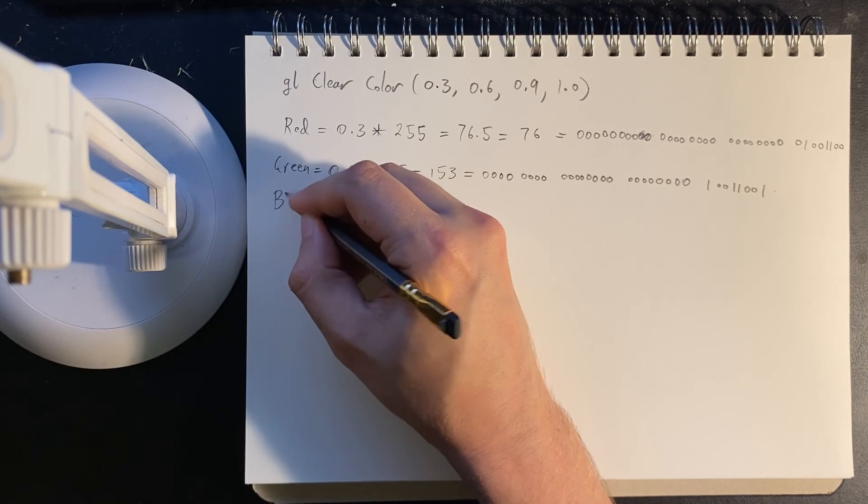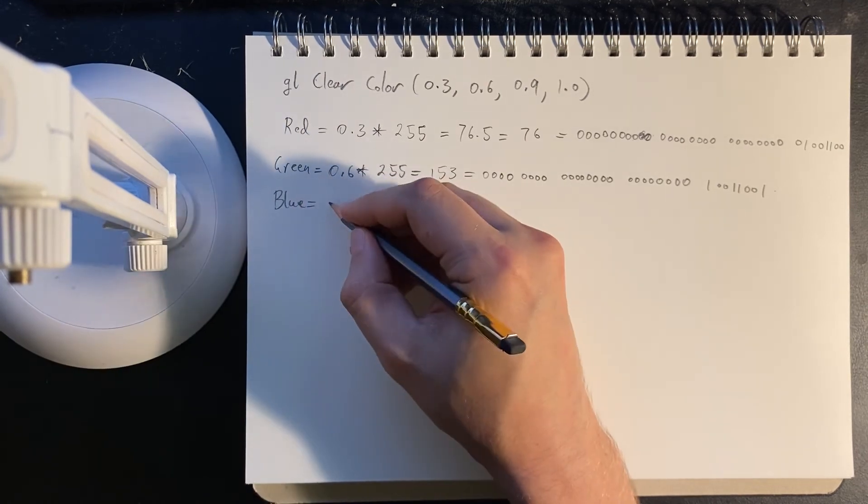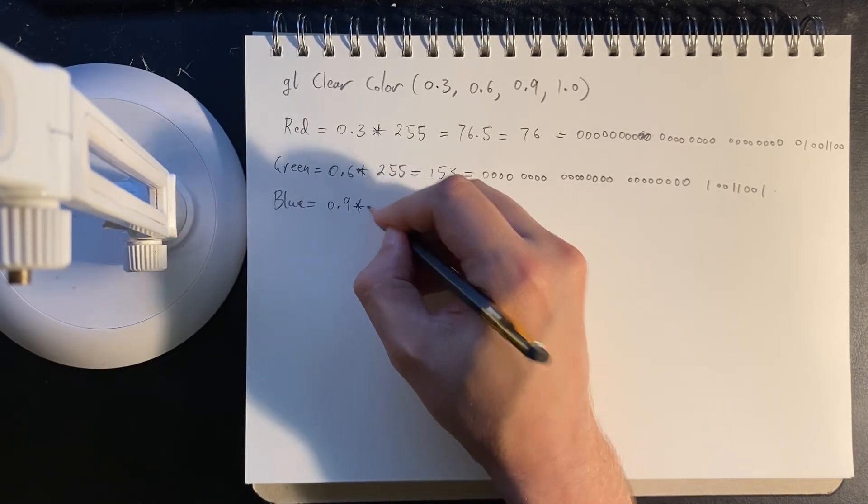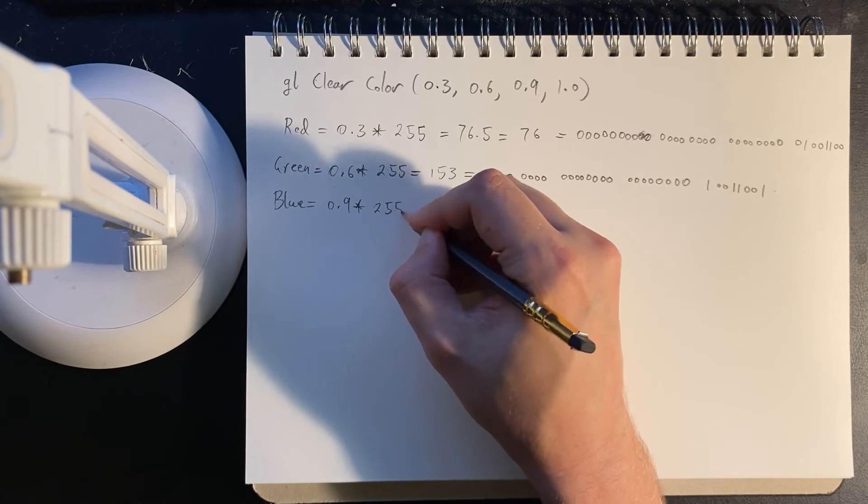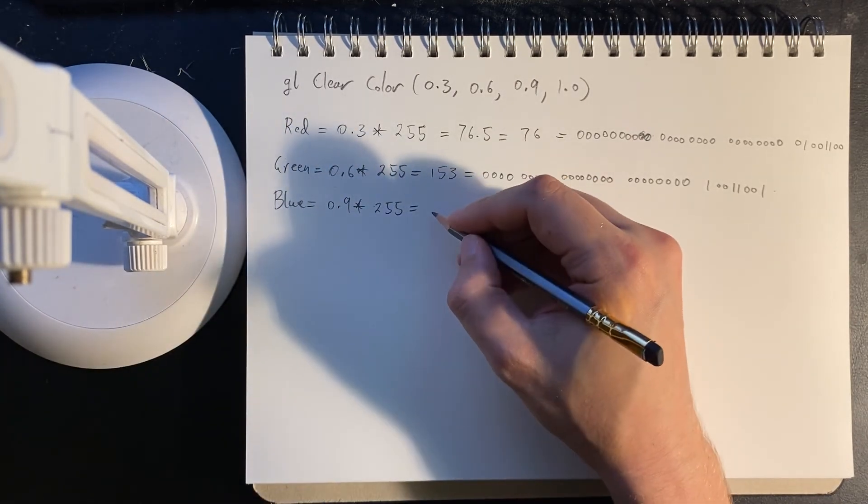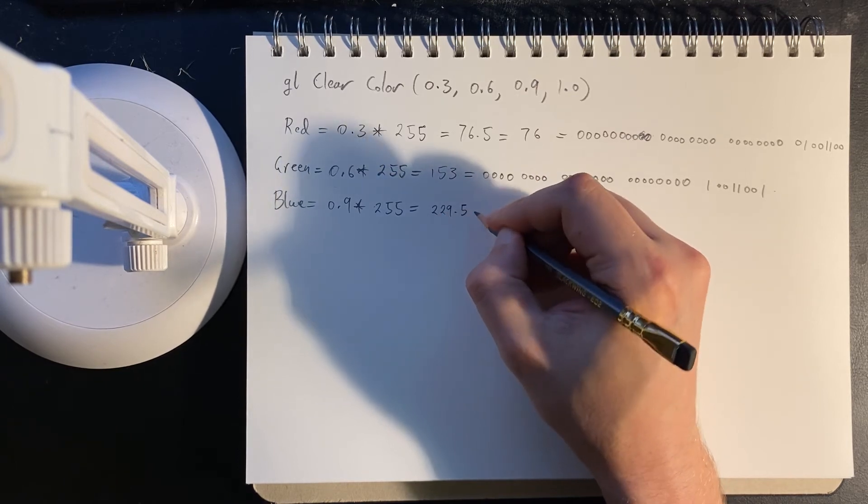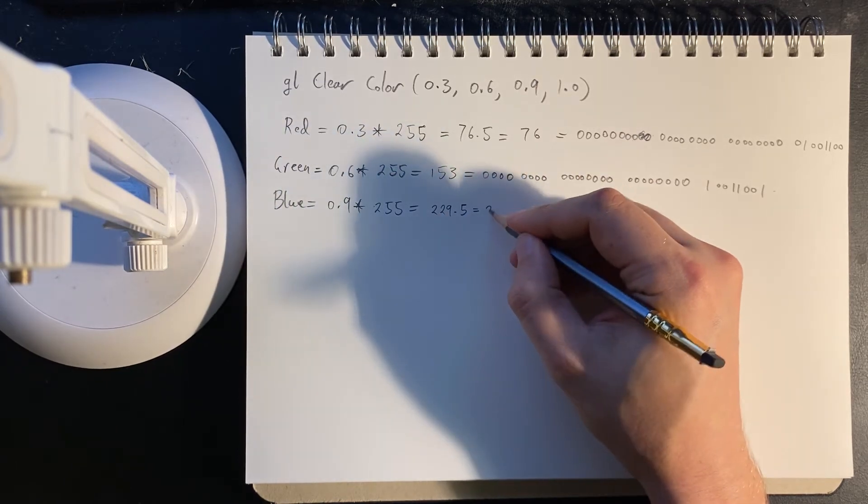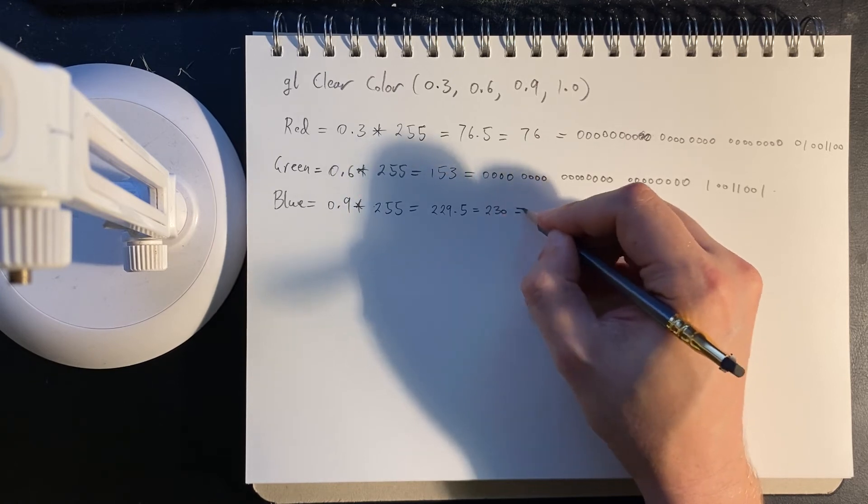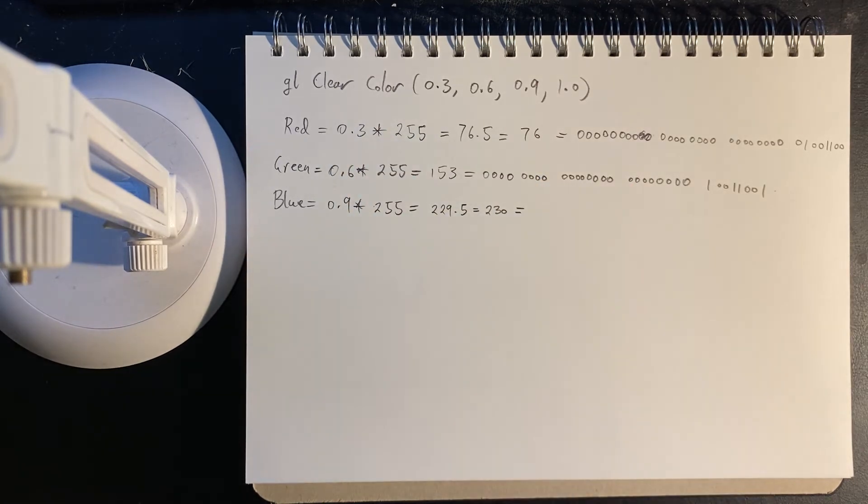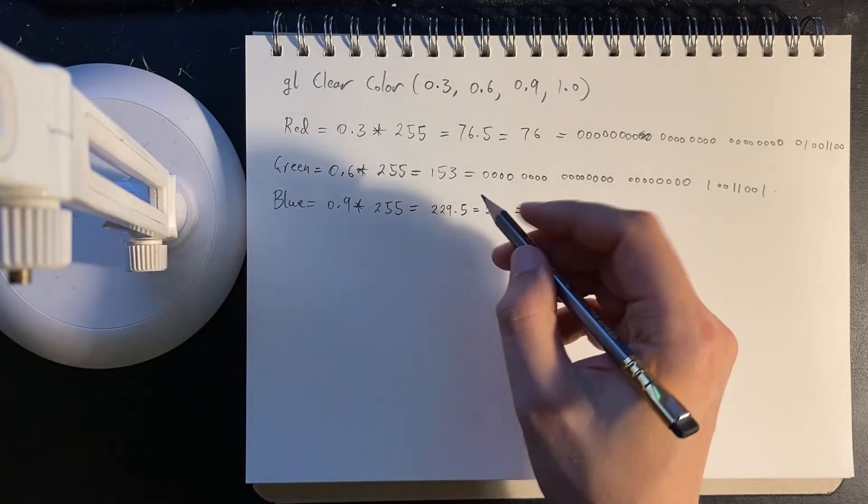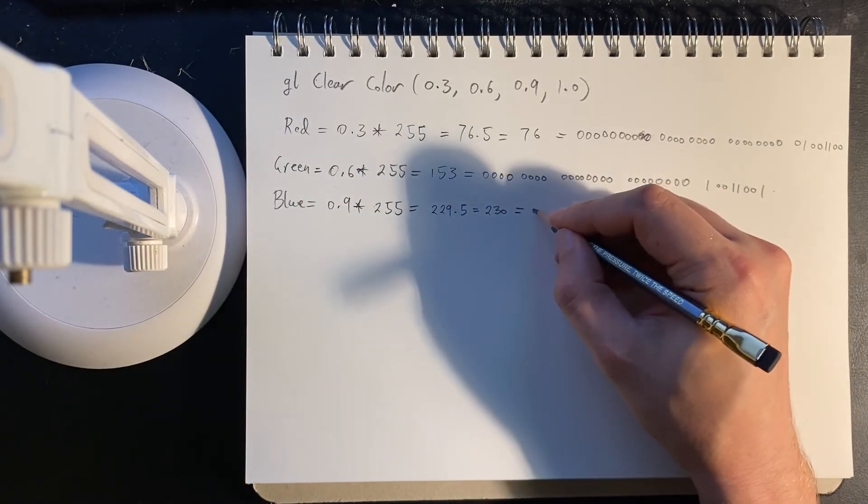Then we have the blue, which is 0.9 times 255, which comes out to 229.5, which is 230. I think in my example, I messed this up and went with 228. Let's just go with 228. A little bit dodgy, but let's do that.